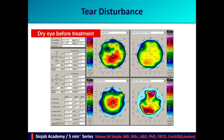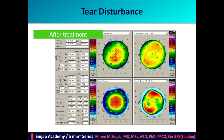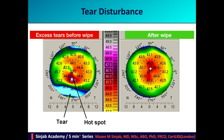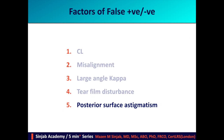Tear film disturbance: this is a dry eye before treatment — look at the irregularity and high keratometry readings — and this is after treatment. This is a case of excess tears before and after wiping the eye. Posterior surface astigmatism may affect in two ways: it affects the total corneal astigmatism and may be a factor behind disparity between topographical astigmatism and manifest astigmatism; and it affects the calculations of toric IOLs.